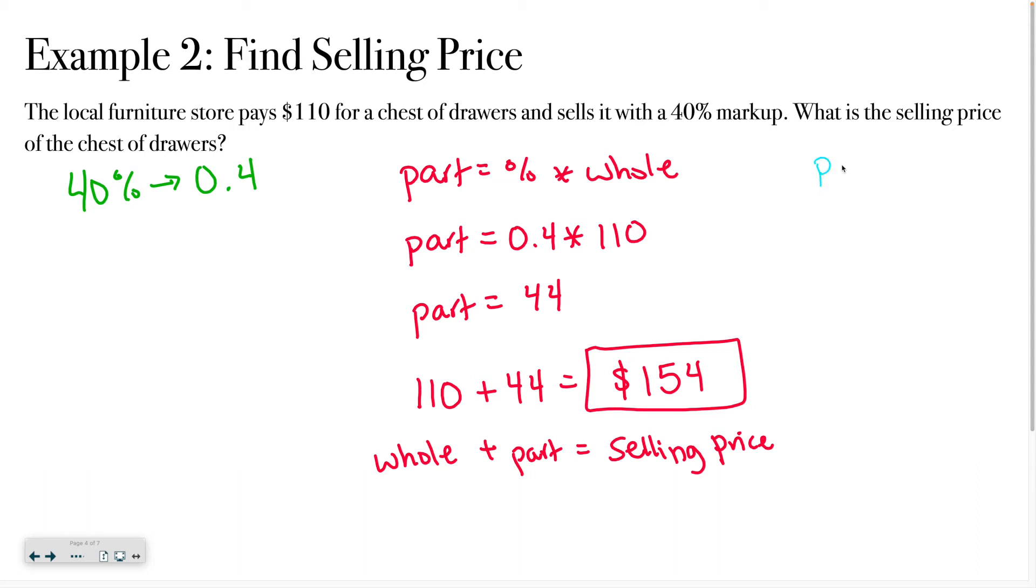So what we can do is we're going to do the part equals, and then this is where I'm going to say 100% plus the percent times the whole. And what I mean by that is this right here is 100% of the cost, right? This right here is 40% of the cost. And what that told me is that this $154 is 140% of the original cost. So a faster way of solving this is you can say that the part equals, and then 100% as a decimal is just 1, right? So I have 1 plus 0.4 times 110. Now you might be thinking, this is not looking any shorter.